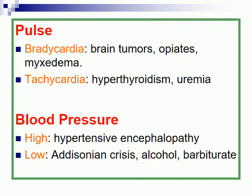Pulse rate — bradycardia or tachycardia. Bradycardia is typical for brain tumour, opiate intoxication, and myxoedema. Tachycardia is typical for hyperthyroidism and uraemia. Blood pressure can be high in the case of arterial hypertension and stroke, and low in the case of alcohol intoxication and Addisonian crisis.